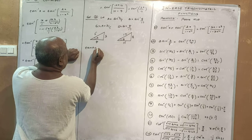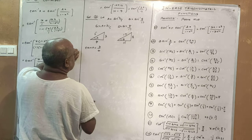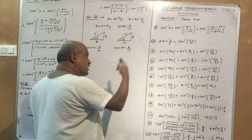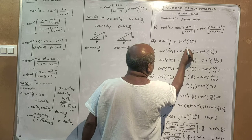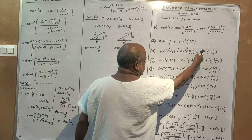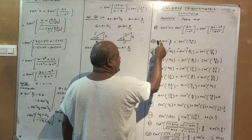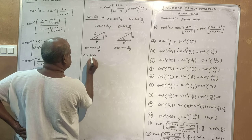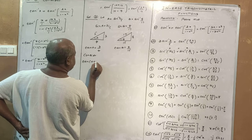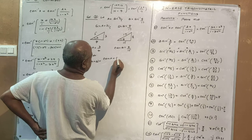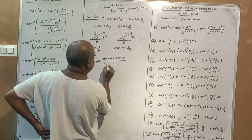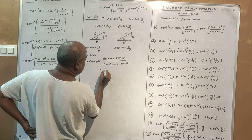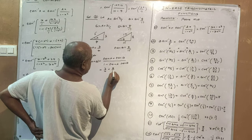For angle B: sin B equals 8 by 17. The opposite is 8, hypotenuse is 17, so adjacent equals 15. Therefore tan B equals 8 by 15. Applying the formula tan(A plus B) equals tan A plus tan B divided by 1 minus tan A times tan B. With tan A equals 3 by 4 and tan B equals 8 by 15.